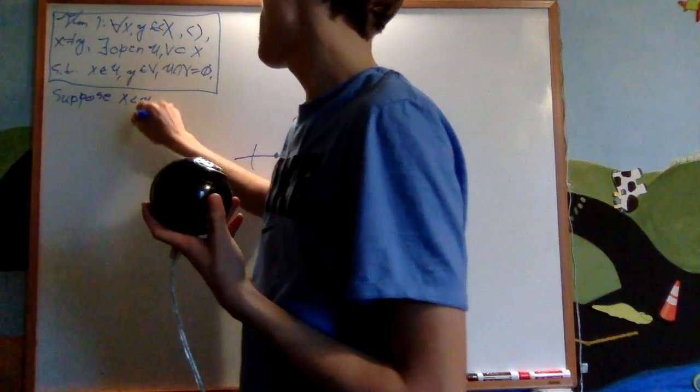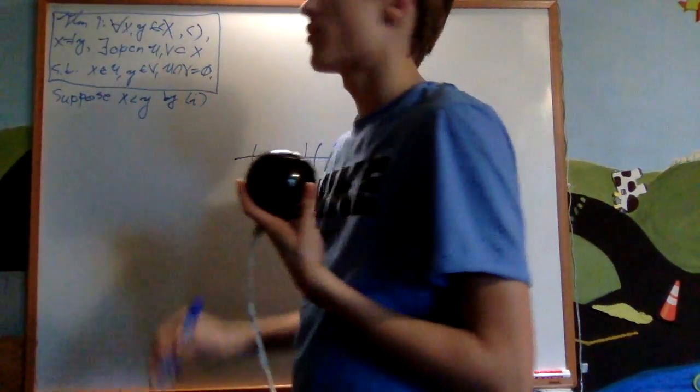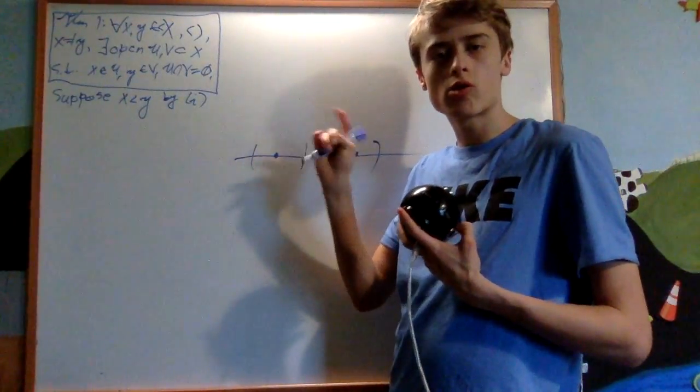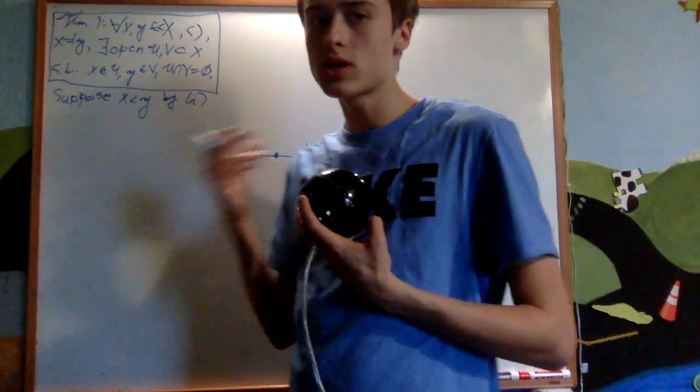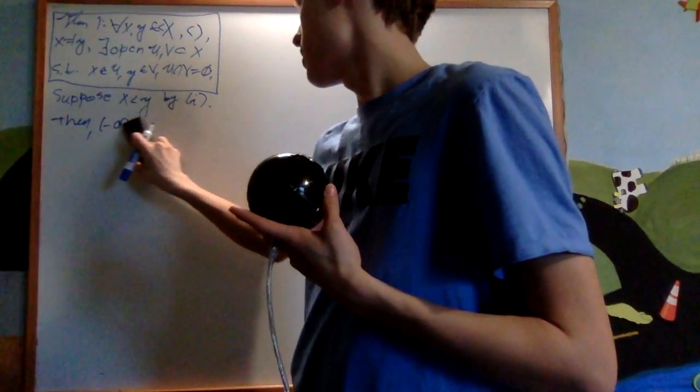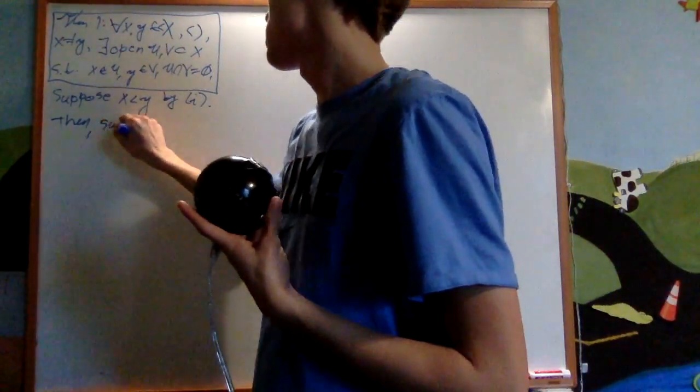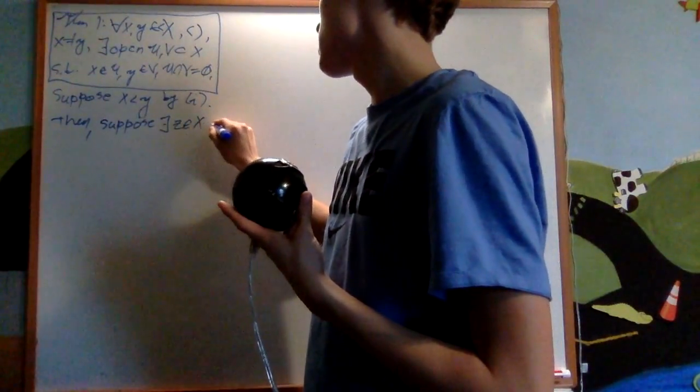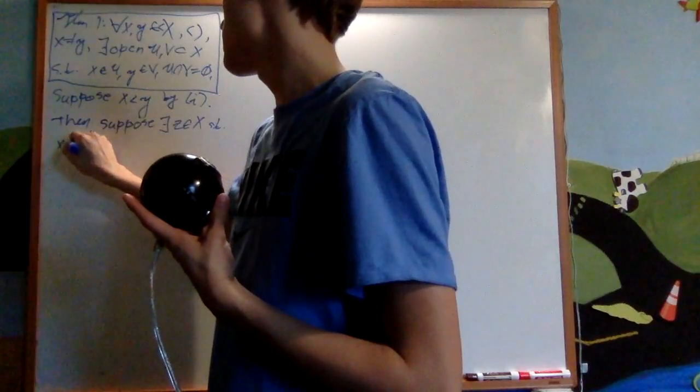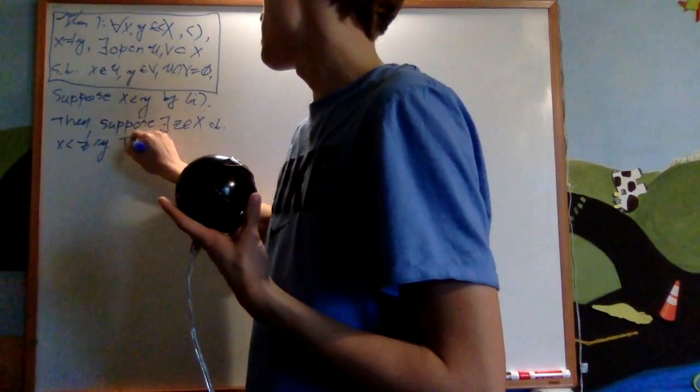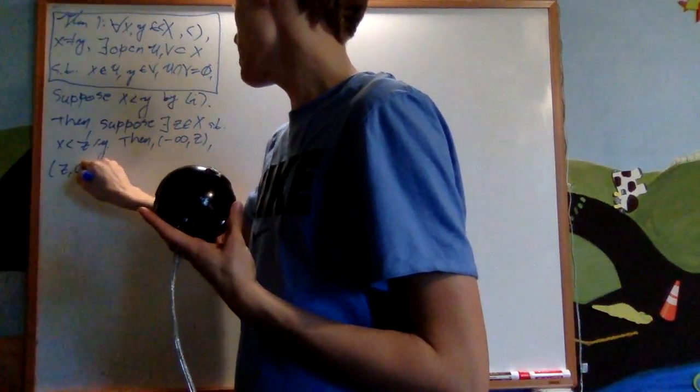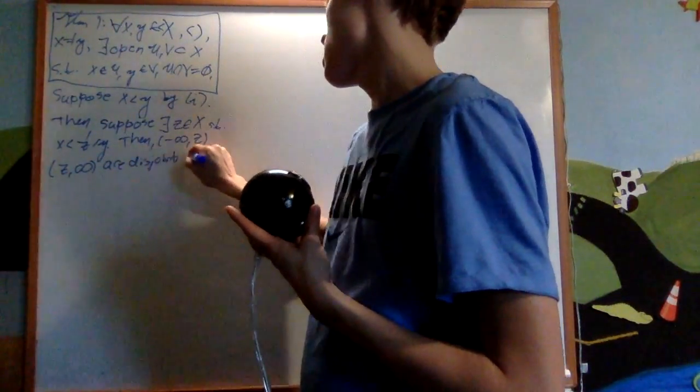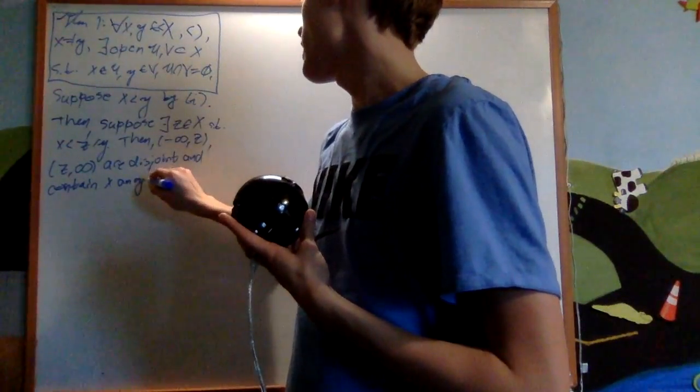So the proof goes like this. Suppose x is less than y by the first condition. The first condition said that either x is less than y or y is less than x, because they're two different points. So x is going to be less than y is one of the conditions, and I'm going to suppose that. Then what I'm going to do is just suppose there exists a z, an element of X such that x is less than z is less than y. Then the two intervals (-infinity,z) and the interval from (z,infinity) are disjoint and contain x and y respectively.